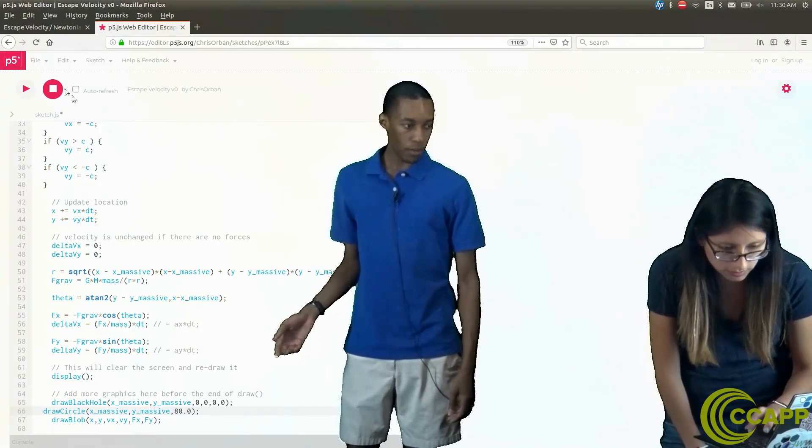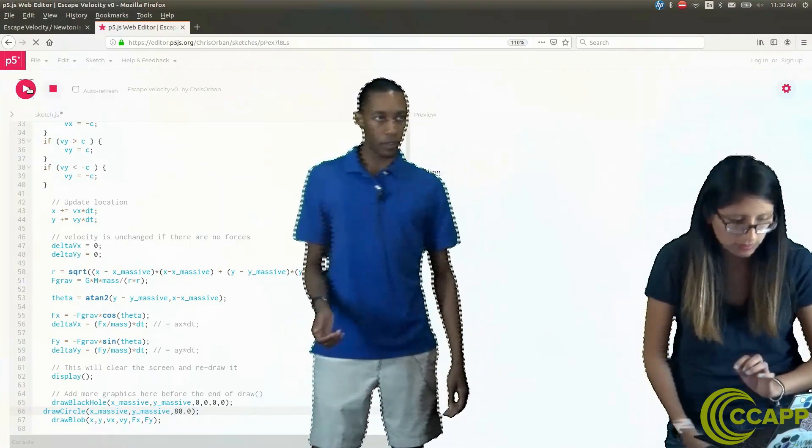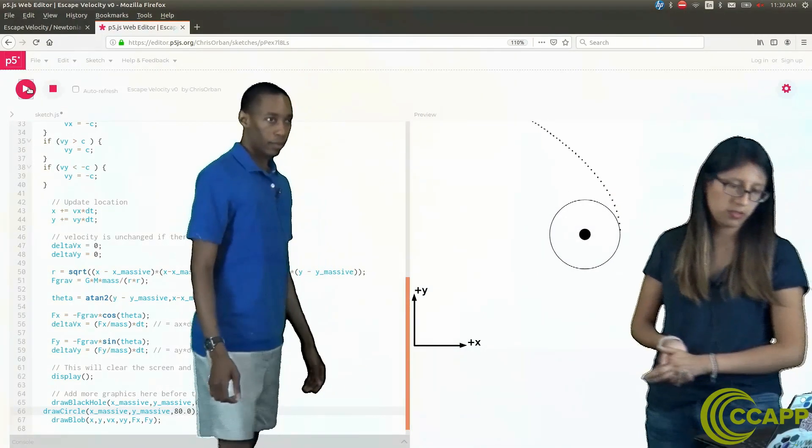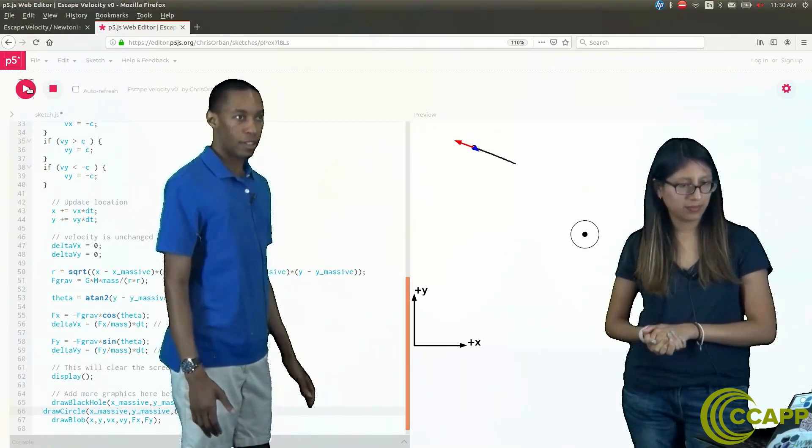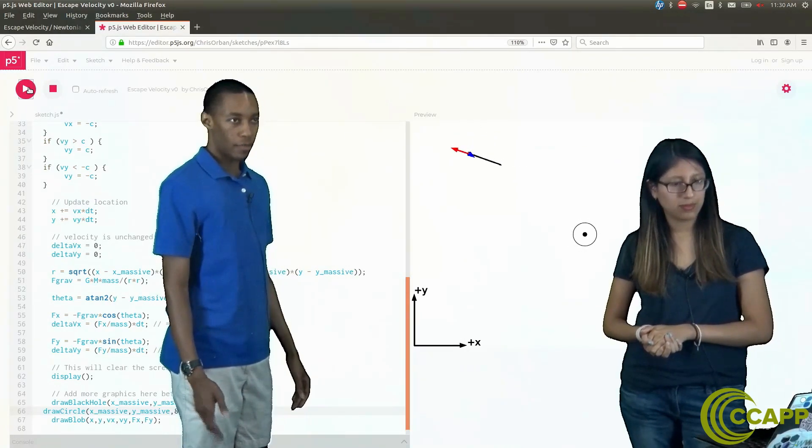When we run our code, you're going to notice this ring up here. See, our object was launched just from the edge of that ring, and that's why it was able to escape.